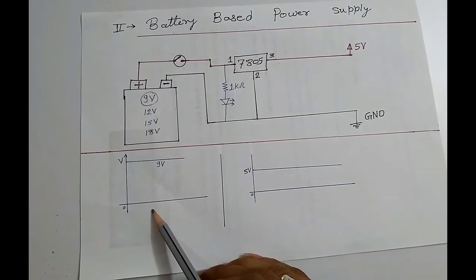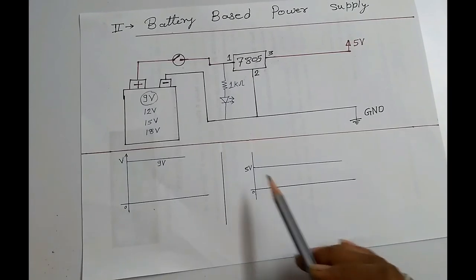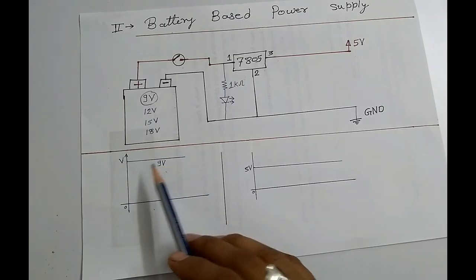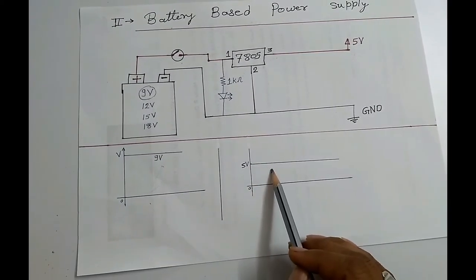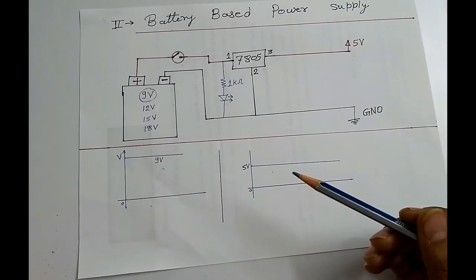Below this circuit you can see about waveform. If you are using 9V battery then this waveform is of 9V, and this waveform is of 5V.